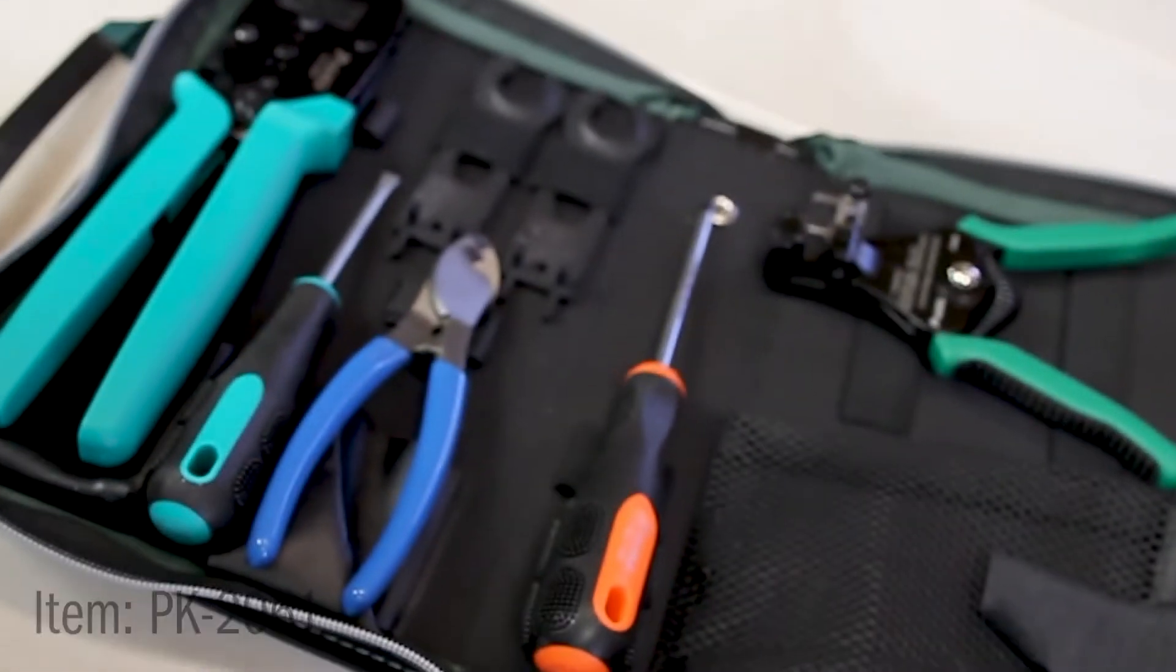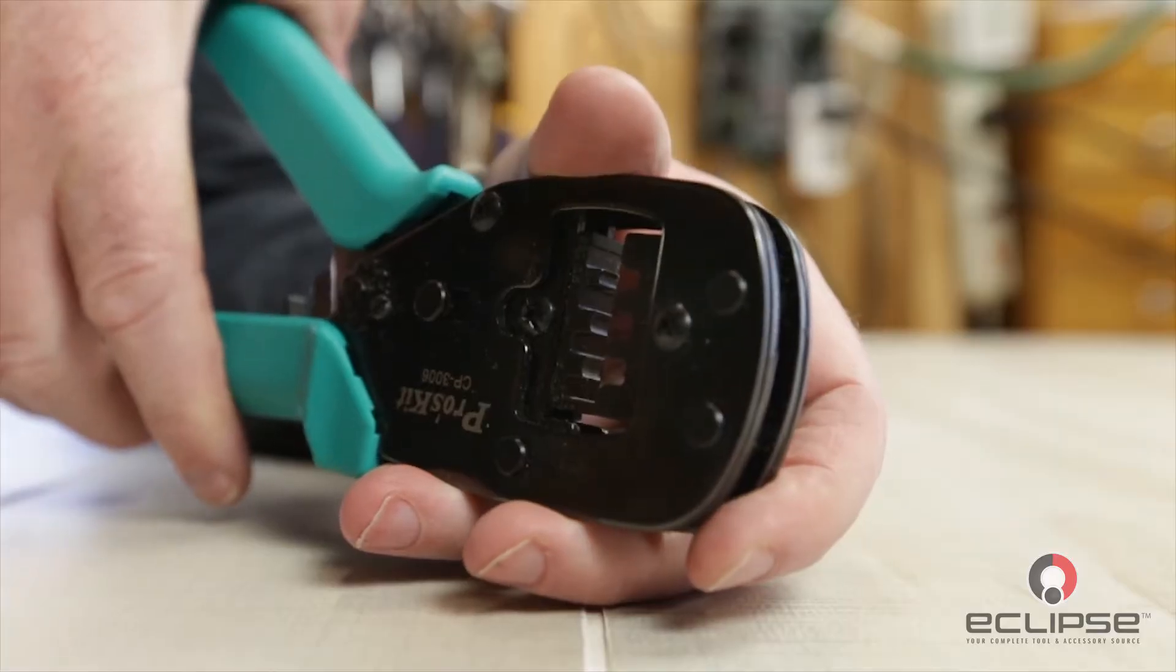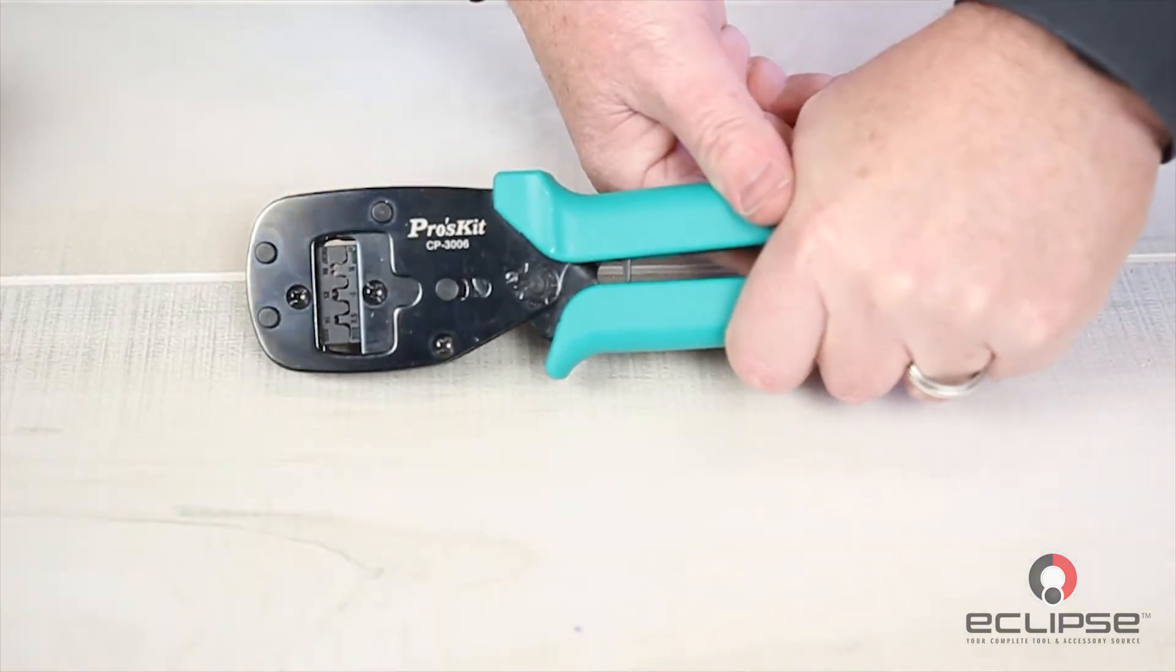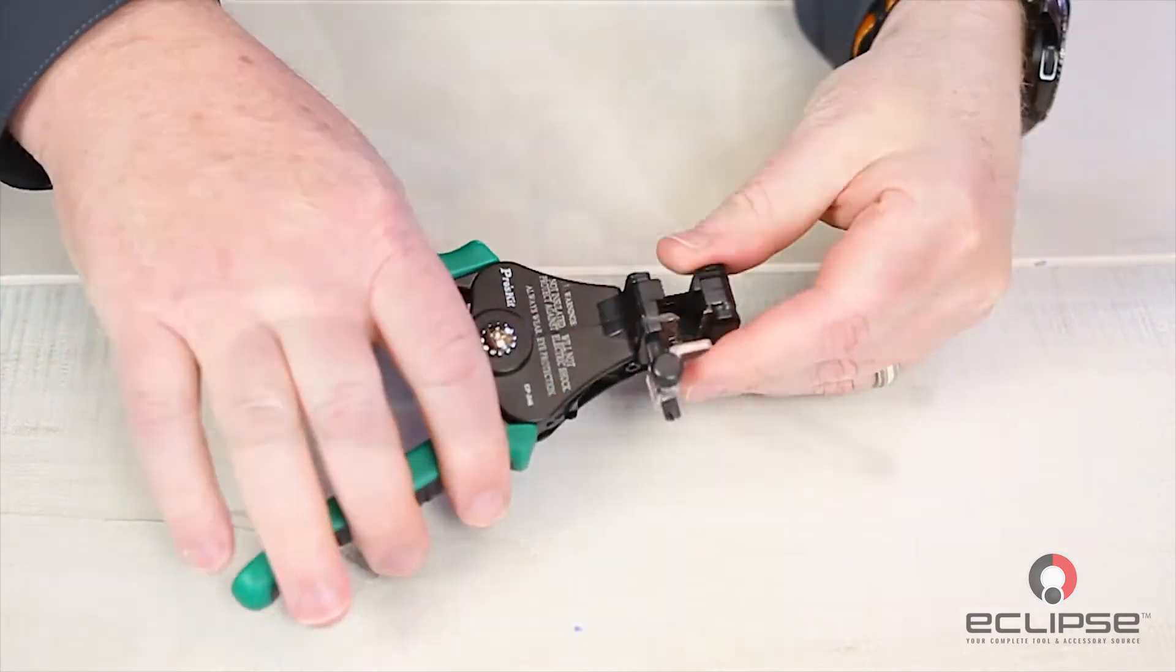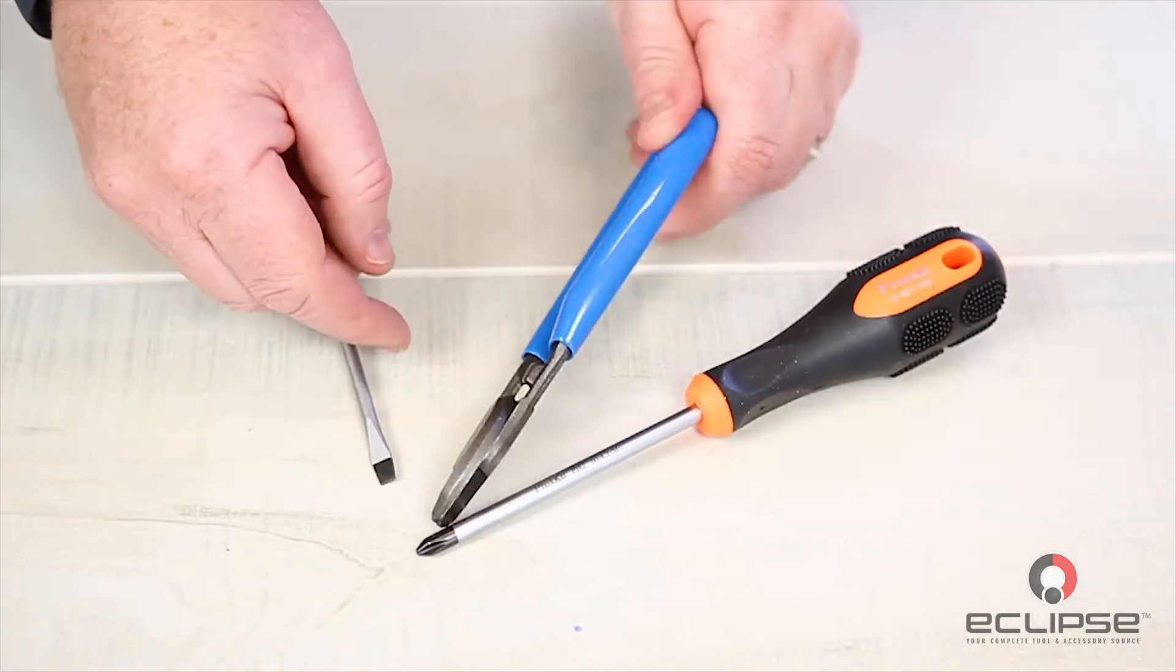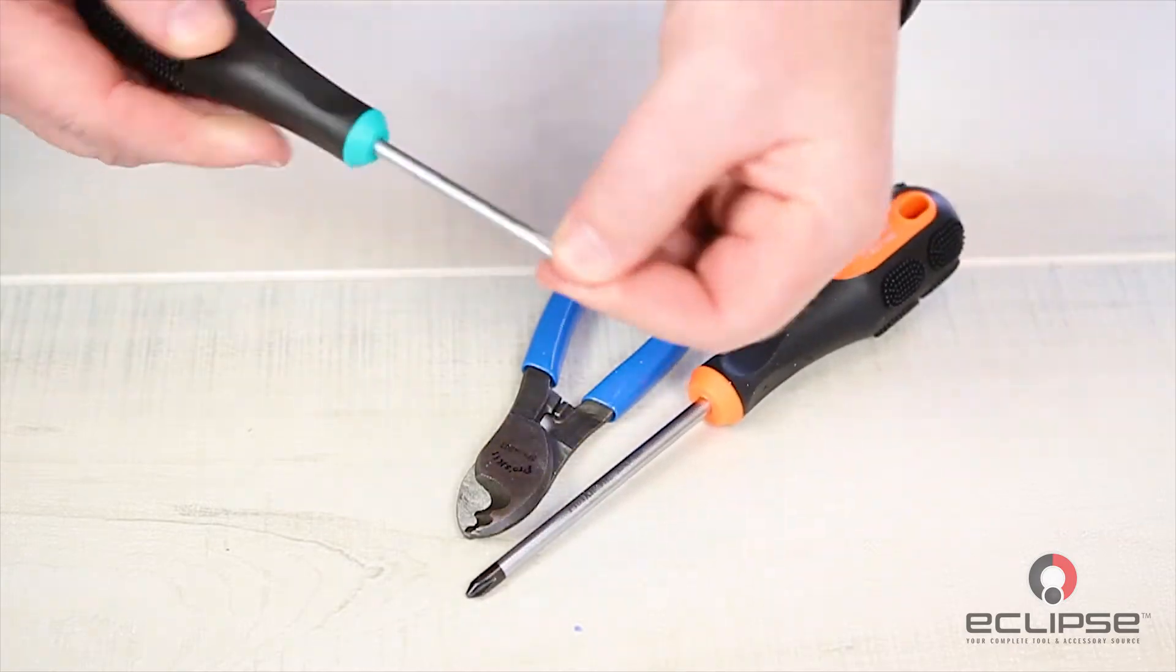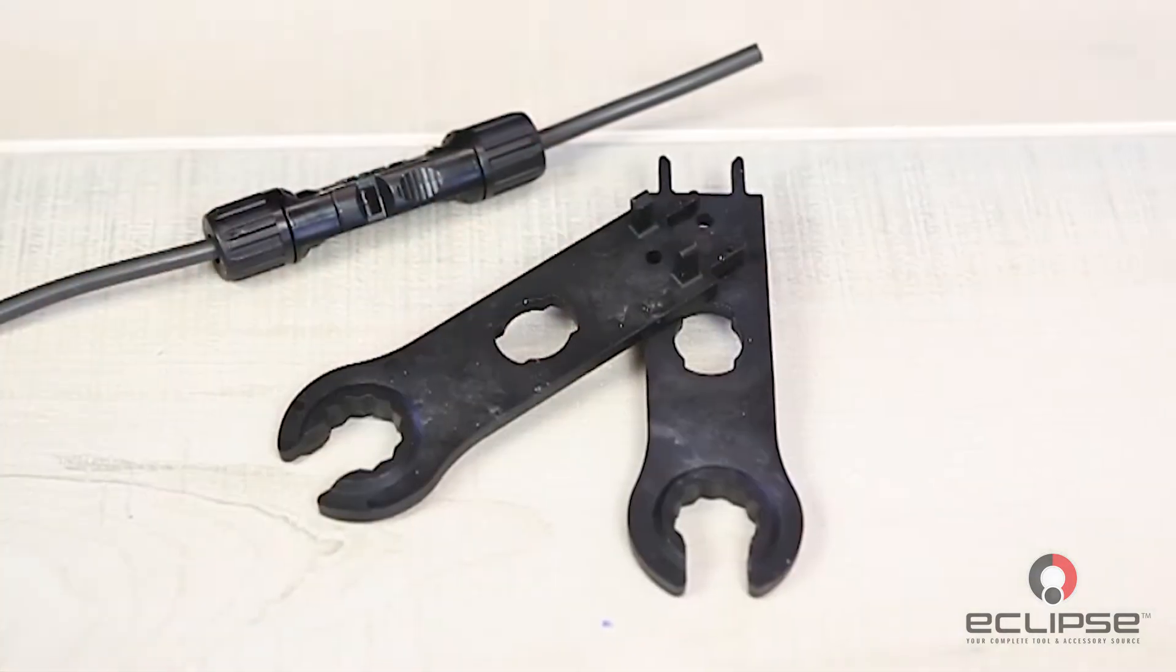First, we're going to give you a brief rundown of what's included with this kit. A parallel action crimper with both MC3 and MC4 die sets, a universal solar cable stripper, a heavy duty forged cable cutter, a set of ProSoft flat and Phillips head screwdrivers, and a set of MC3 and MC4 open ended spanners.